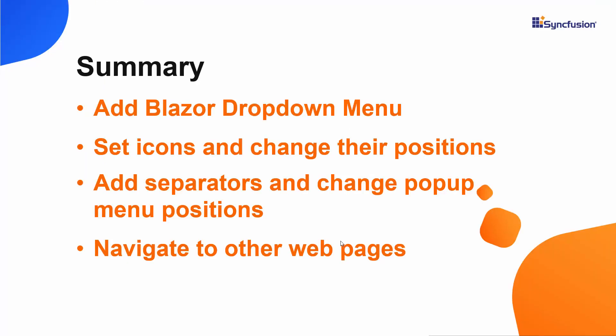Let me quickly recap what we have seen so far. We have seen how to create a Blazor project using Visual Studio 2019 and add a Syncfusion Blazor drop-down menu component in a WebAssembly app. We have seen how to set icons, add separators, and add events to the drop-down menu component. Finally, we have seen how to navigate to another web page, as well as how to display the drop-down menu items horizontally.